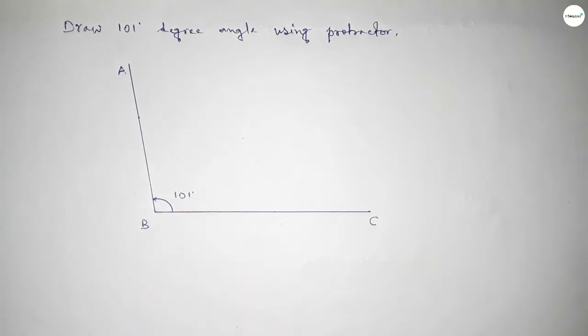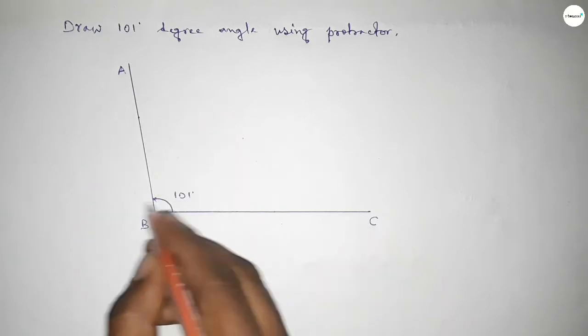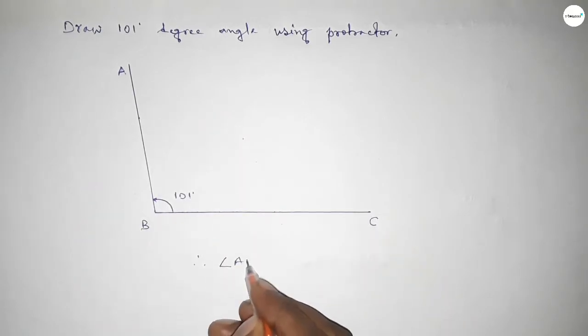Therefore, angle ABC equals 101 degrees. That's all.